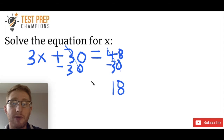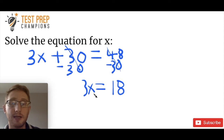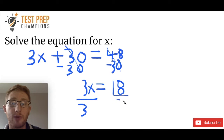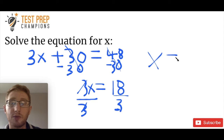Now we rewrite this — we bring that 3x down, so we've got 3x equals 18. Now what we want to do is get the x by itself. 3x is 3 multiplied by x, so the inverse operation of multiplication is division. We want to divide by 3 on one side, and what we do on one side we do to the other. 3 divided by 3 gives us 1, and 1 times x is just x. 18 divided by 3 is equal to 6. So the answer is x equals 6.